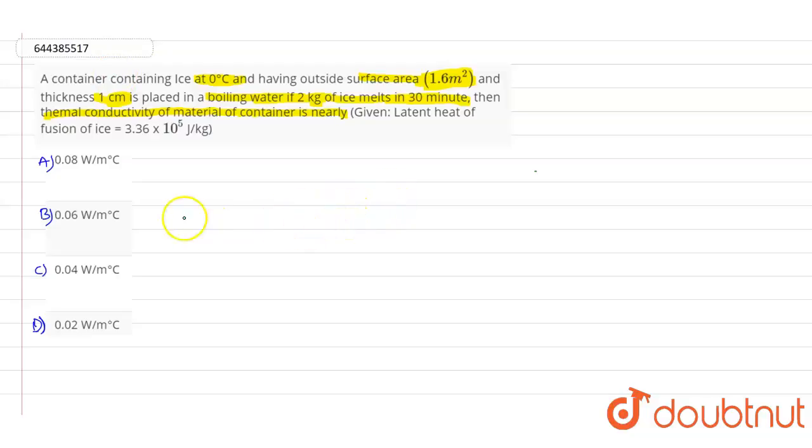So the given data is: m equals 2 kg, and area value is given as 1.6 meter square. Also the value of t is given as 30 minutes.